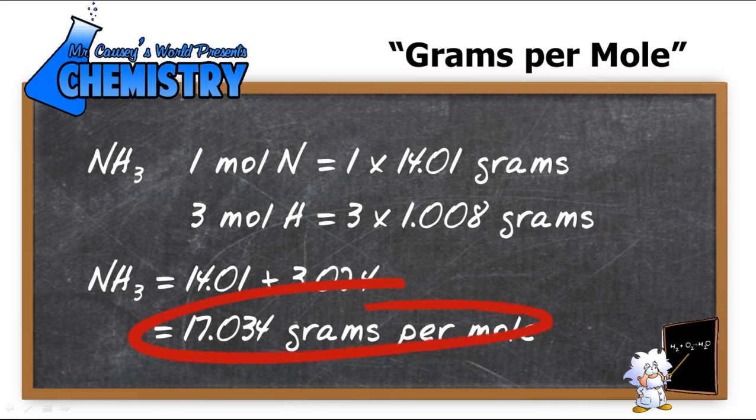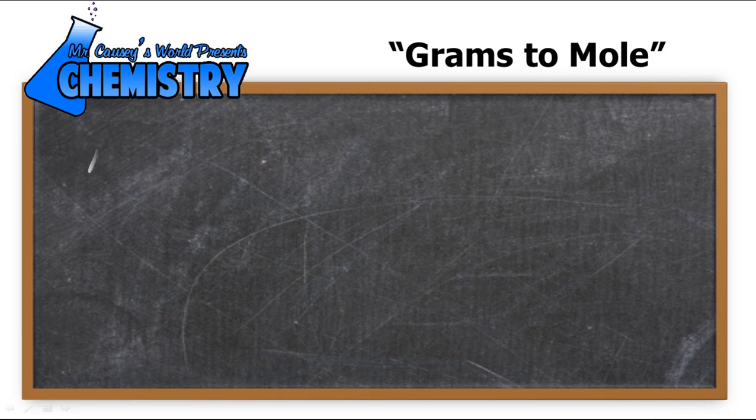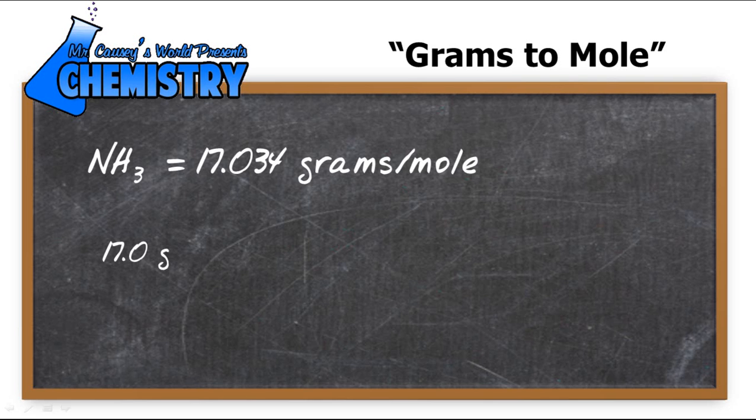Now, that's the molar mass, grams per mole, and we can take that and use that to convert to moles. So, 17 grams times 1 mole over 17.03 grams. And we know to write it this way so that our grams cancel out.